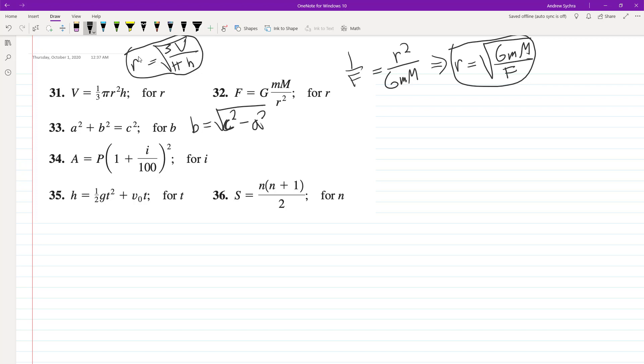And that's if you had one leg and the hypotenuse but didn't have the other leg. That's how you'd use that equation.